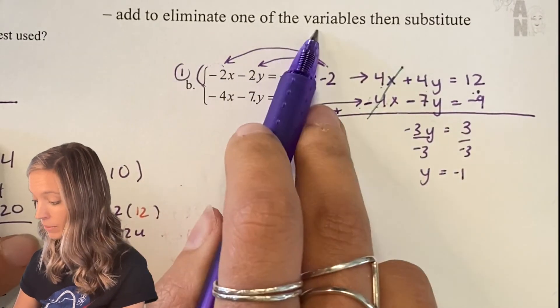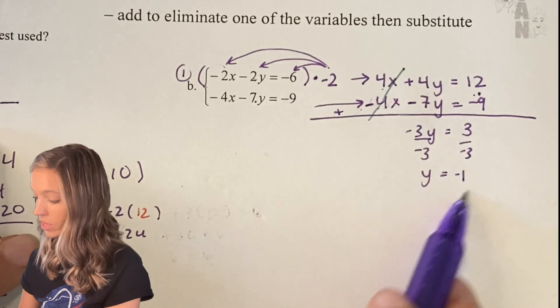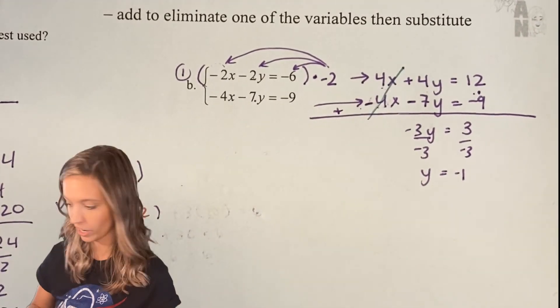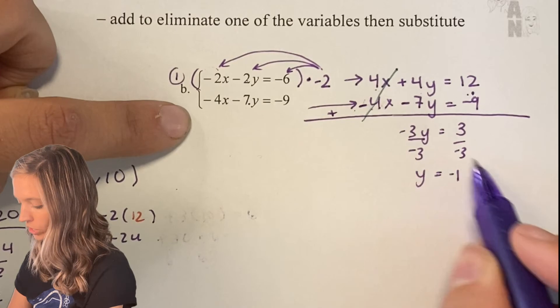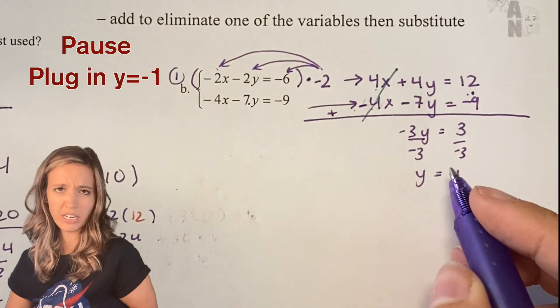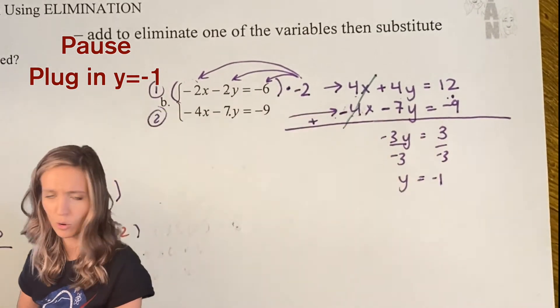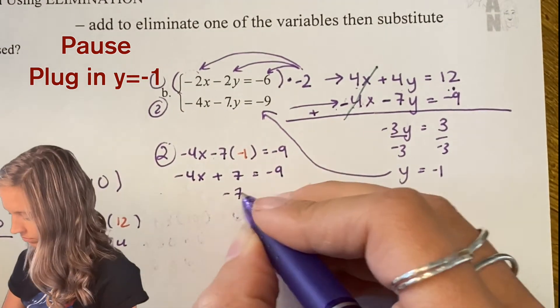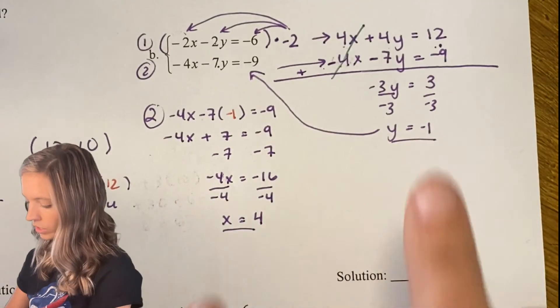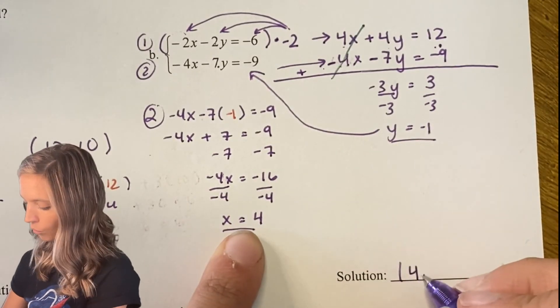Now after I eliminate one variable, I substitute the solution I get to find the other variable. So I can choose first equation or second equation to substitute this one in. I'll do something different this time and substitute it into the second equation. So it looks like my solution is going to be (4, -1).